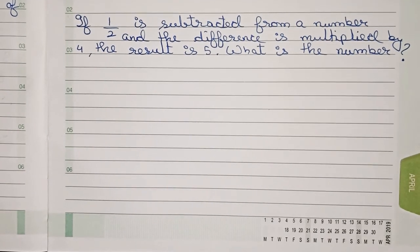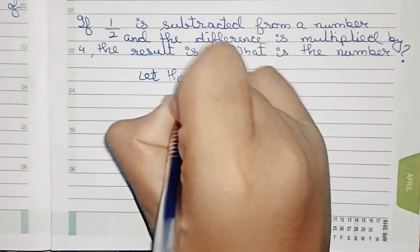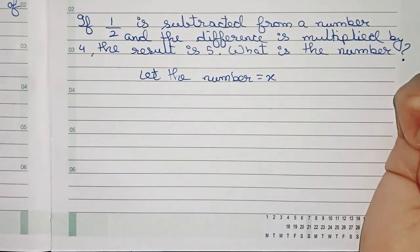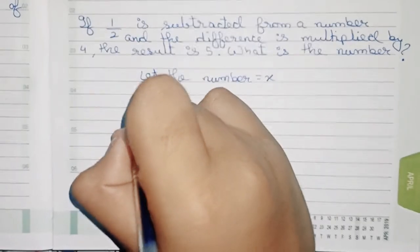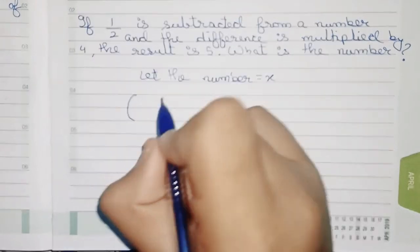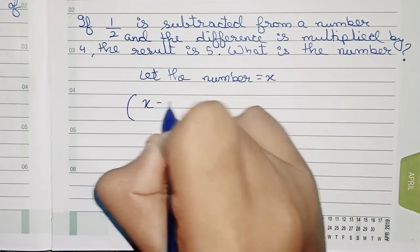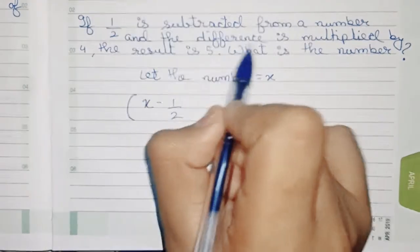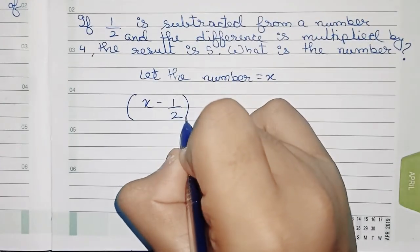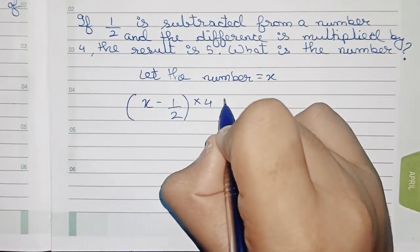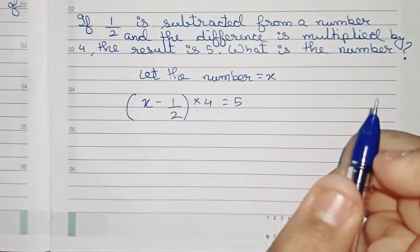So now I'll solve this. First, we write: let the number equal x. So now we frame our equation. The equation will become (x - 1/2) as it is given 1/2 is subtracted from a number, and the difference is multiplied by 4, that means ×4, that equals 5. So this will be our equation.